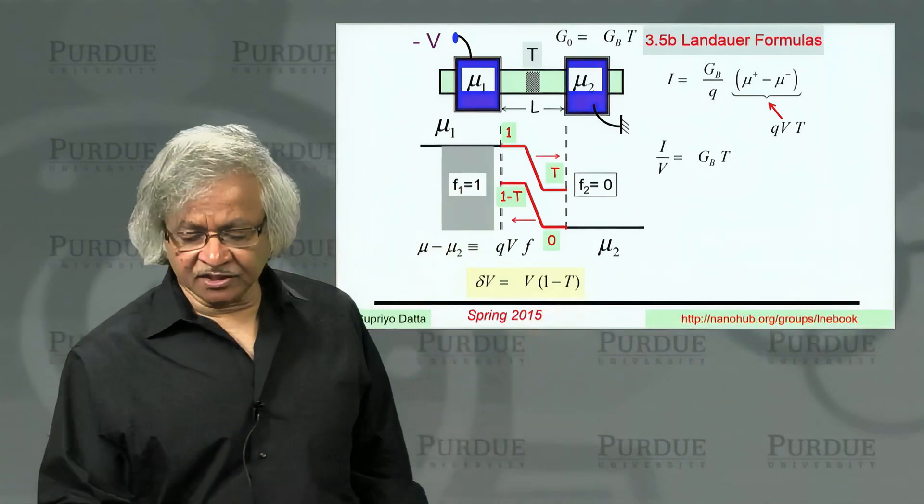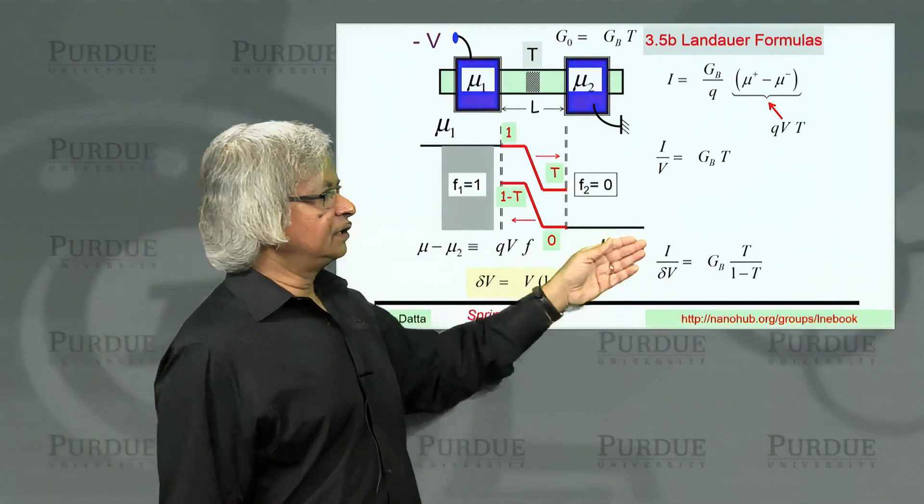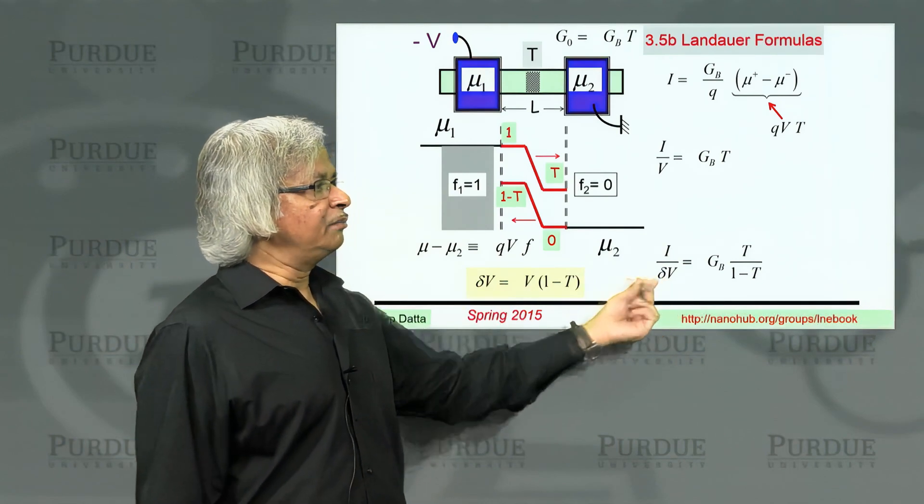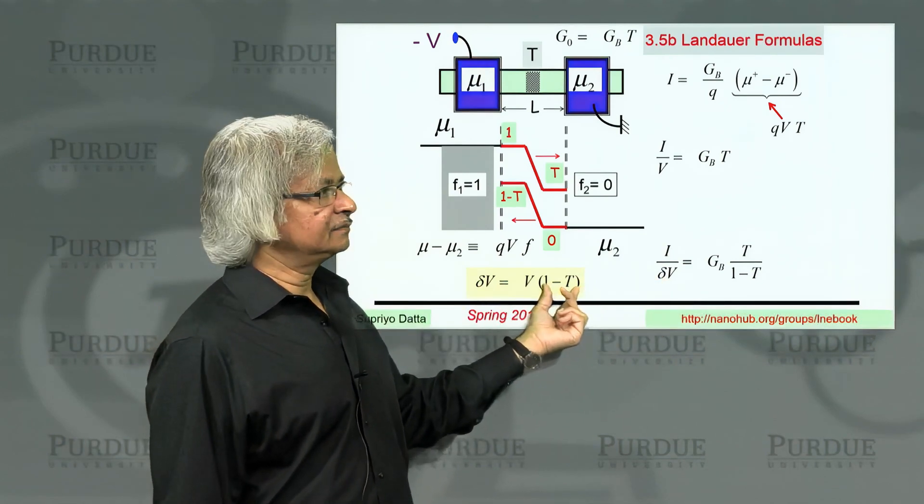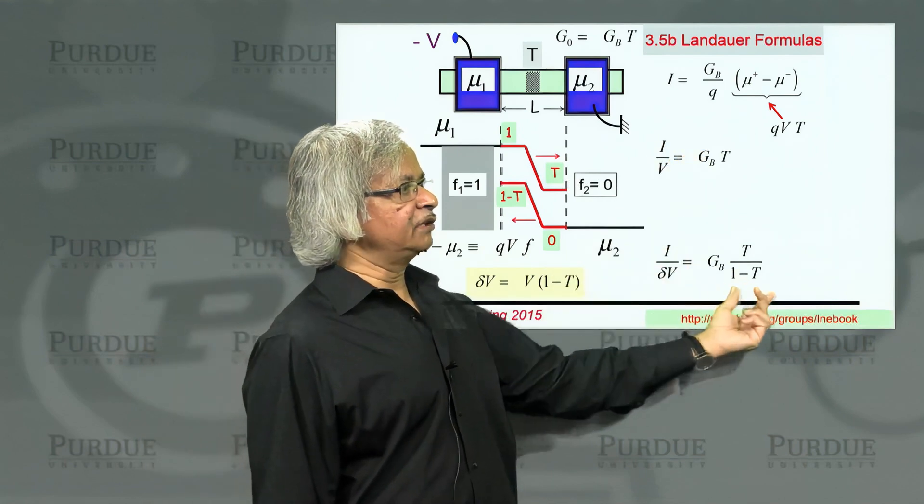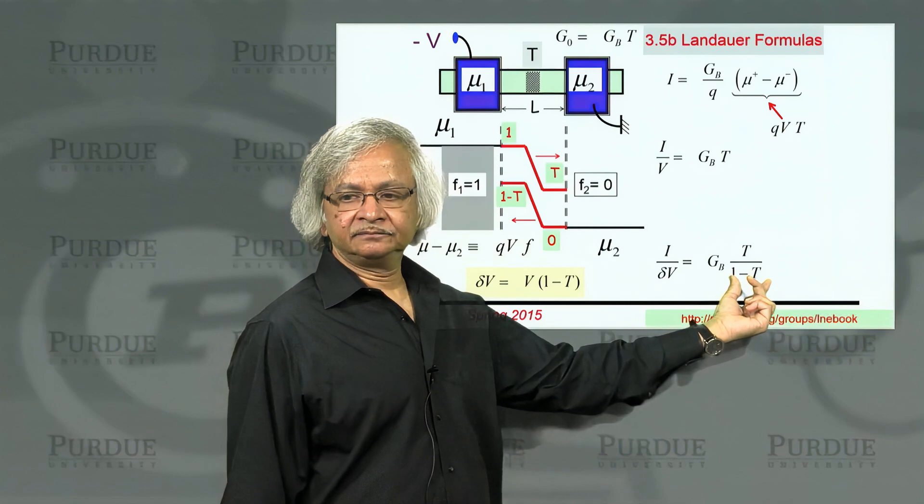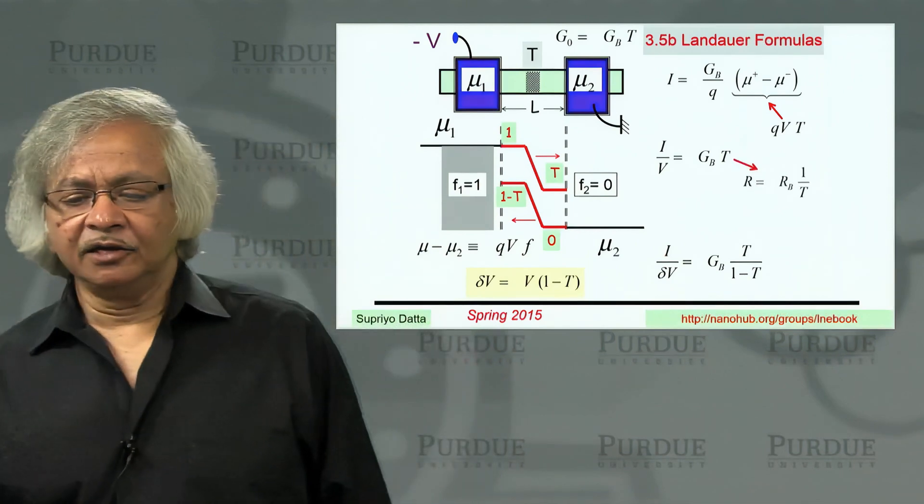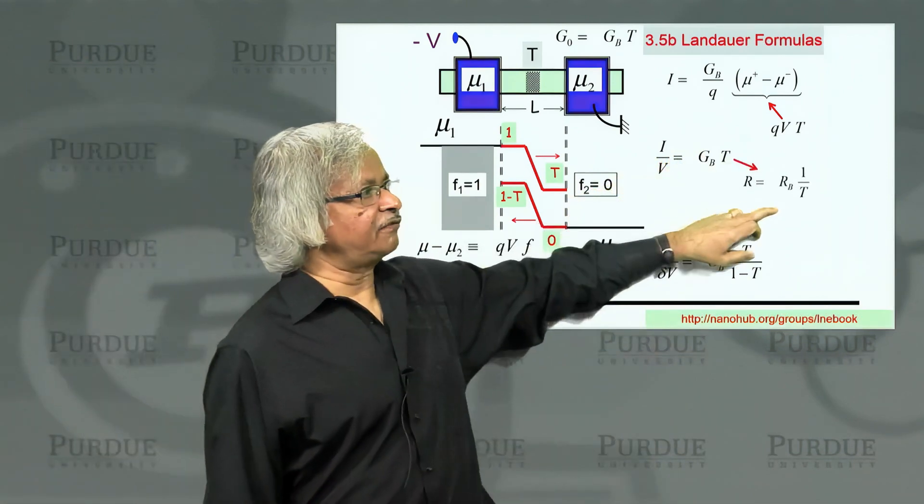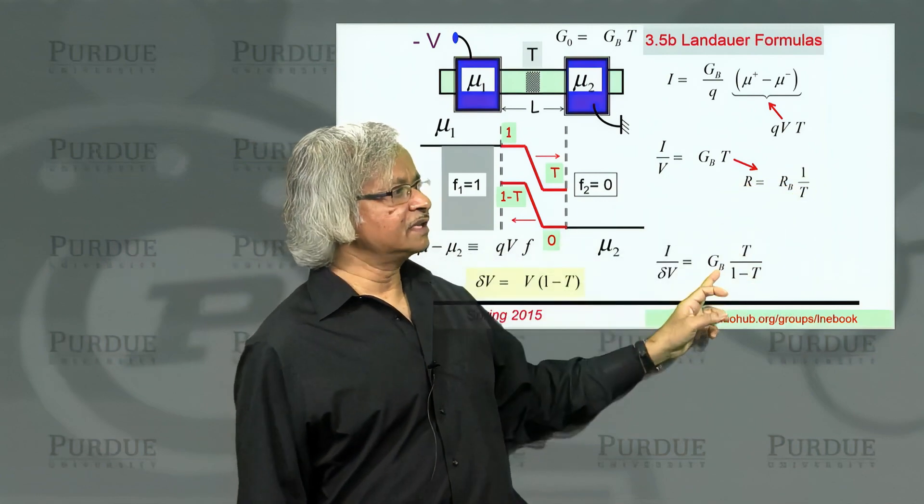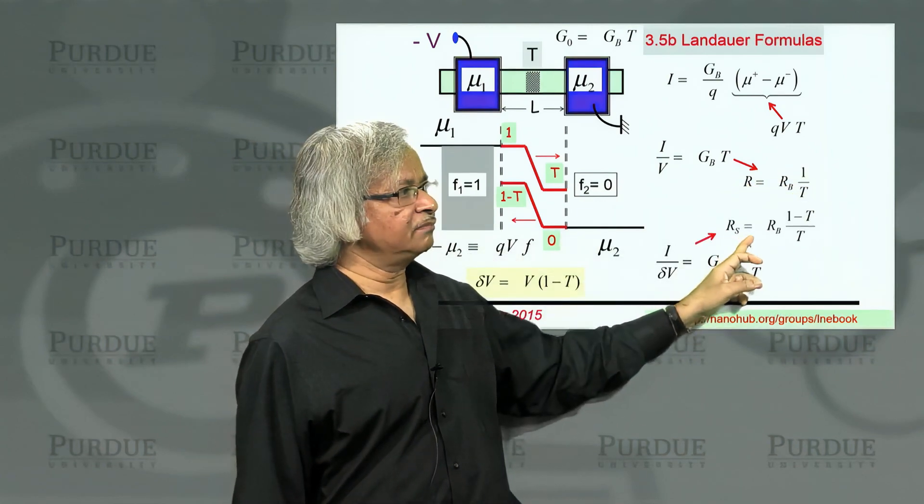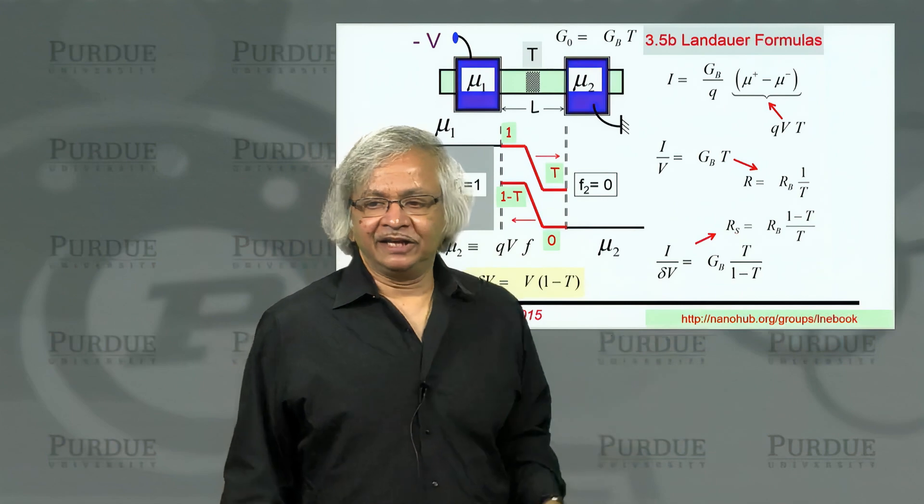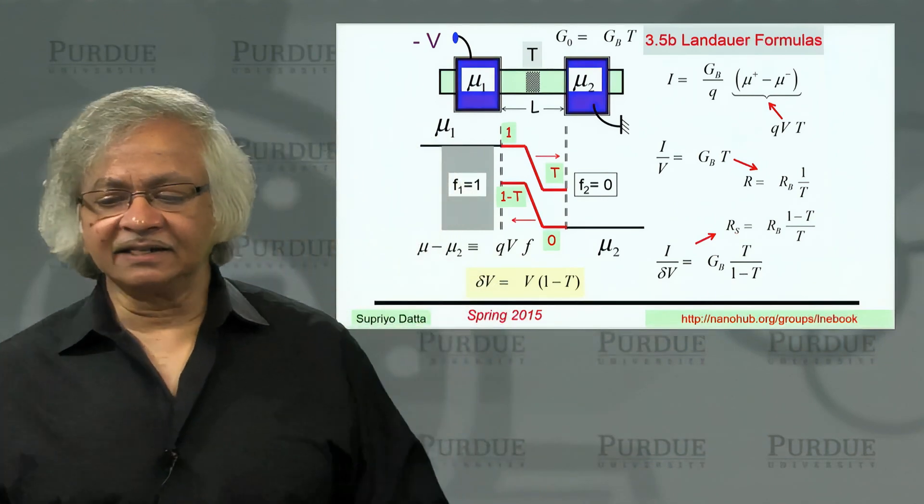What is the resistance associated with that? You can look at the conductance, current divided by delta V. Because of this extra 1 minus T, you'll get what we had before but now with the 1 minus T in the denominator. If you write the resistances, this would give you a resistance of R_b times 1 over T, whereas this one would give you a resistance of R_b times 1 minus T over T. And I've put an s there to indicate this is what you could call the scatterer resistance.